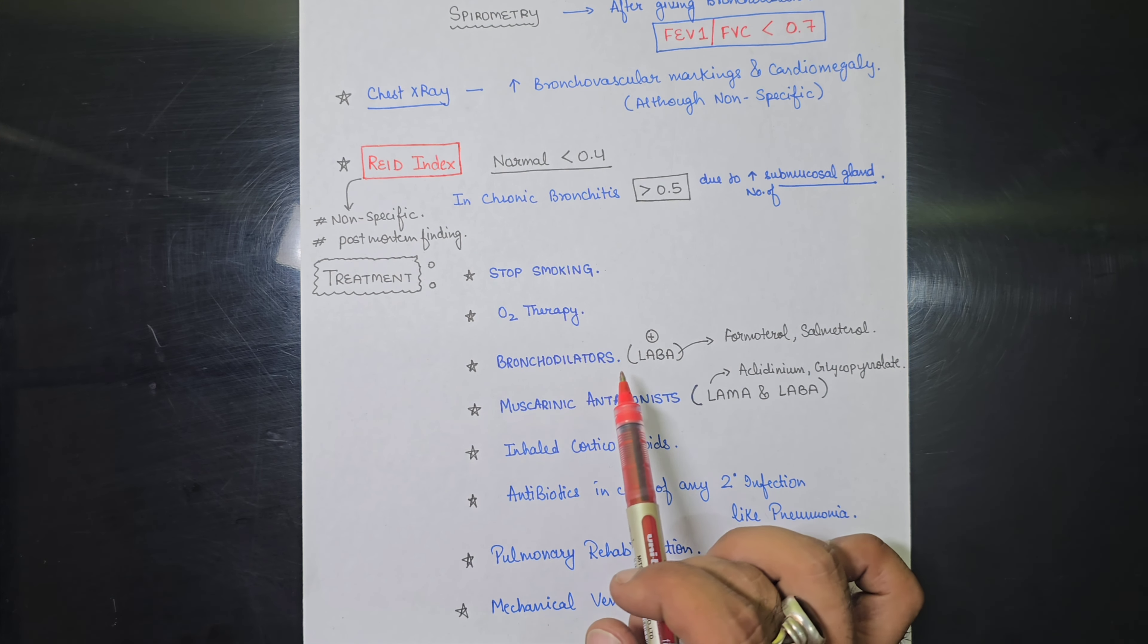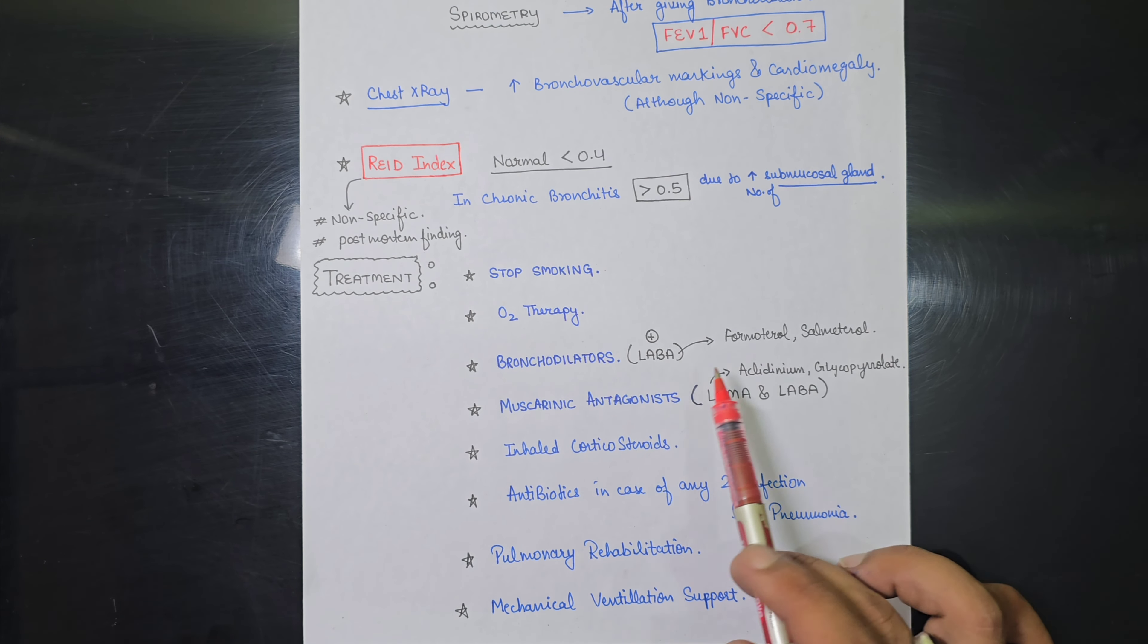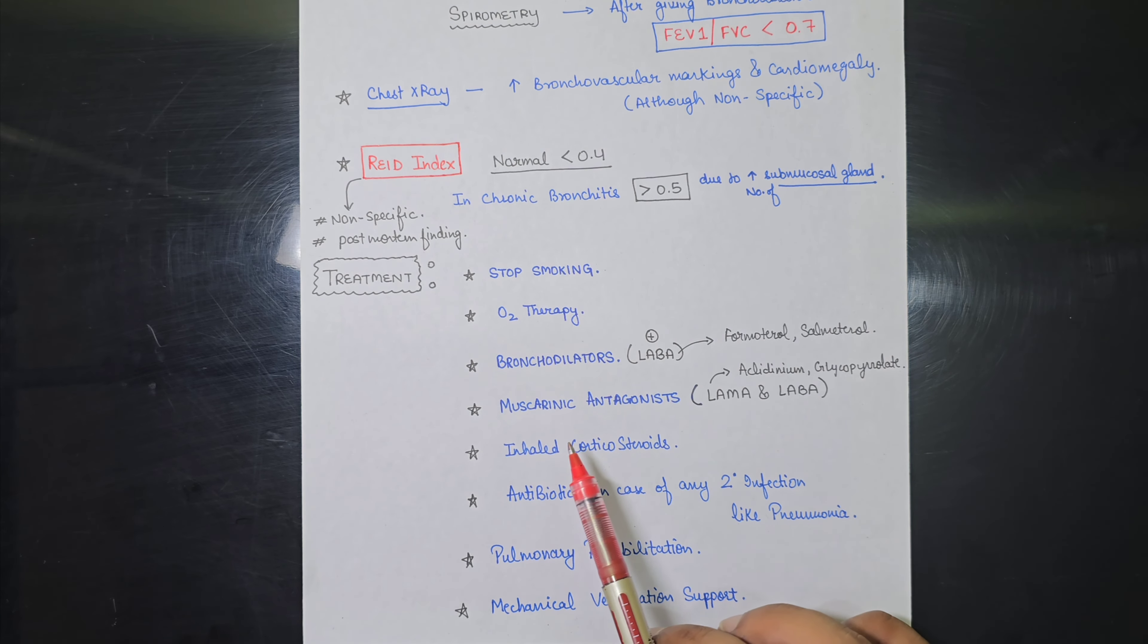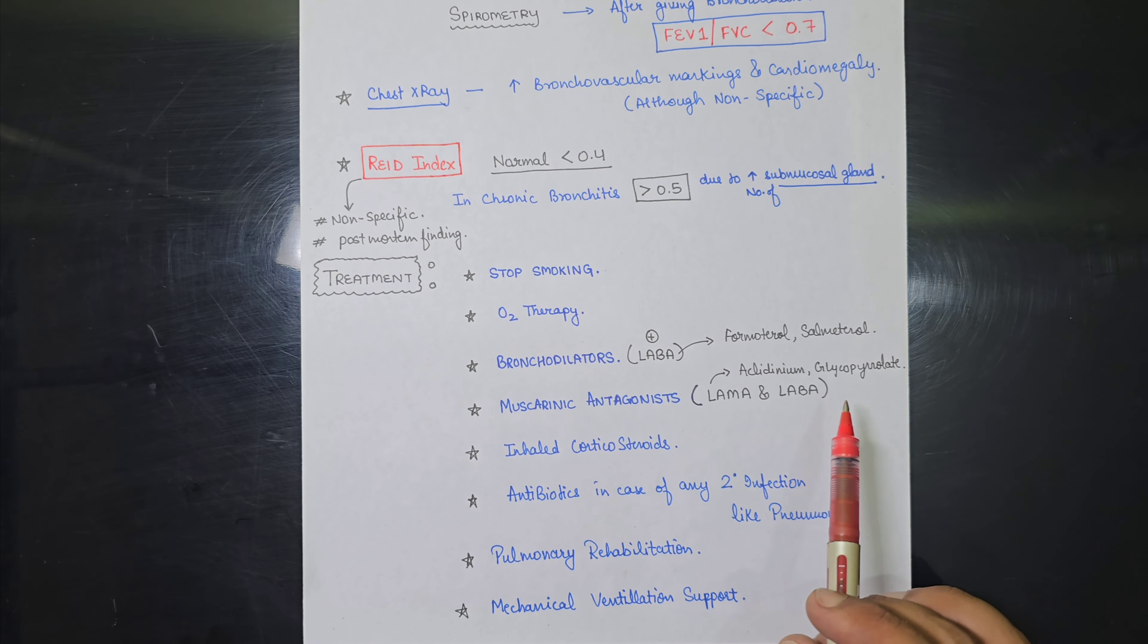Third, we can also give bronchodilators in which long-acting bronchodilators like formoterol and salmeterol are more helpful, and muscarinic antagonists like LAMA and along with LABA, long-acting beta-agonists can also be given. LAMAs are basically aclidinium and glycopyrrolate, and inhaled corticosteroids we can also give.